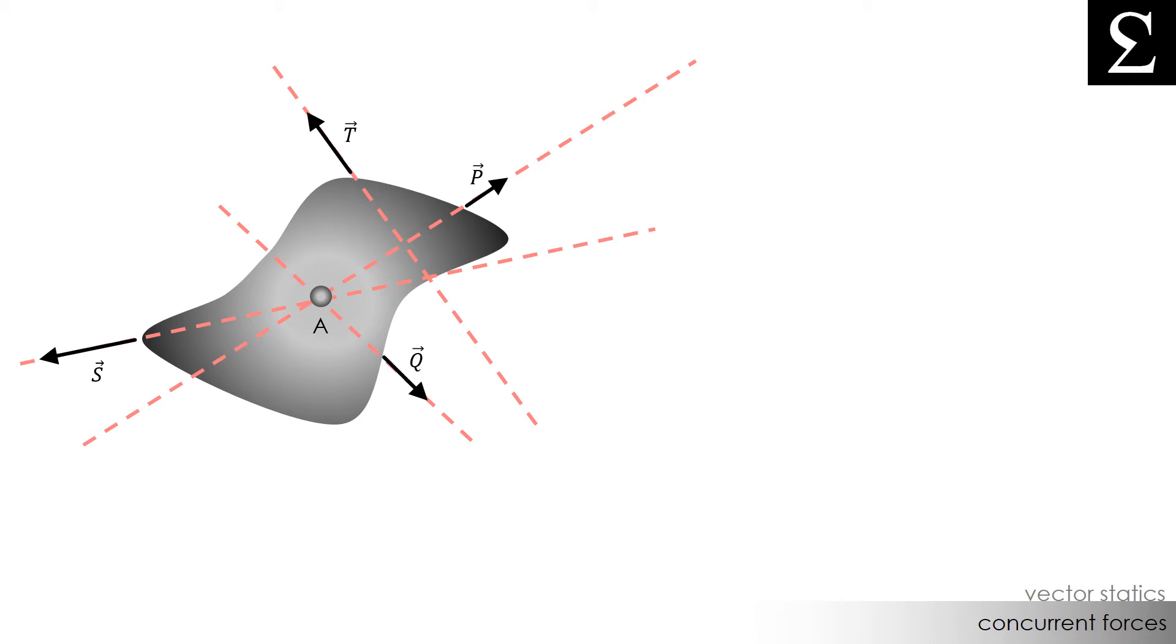This means that force T is not a concurrent force amongst P, Q, and S. However, we do notice that the line of action for force T does intersect at the line of action for the force P and S. I will call these points B and C respectively.